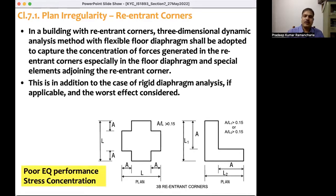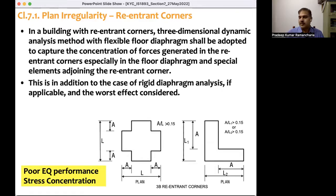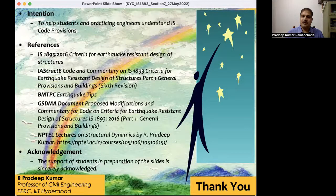In summary, when a re-entrant corner is present — that is, if the projected part in plan in any direction is more than 15% of the overall dimension — then the building has re-entrant corners. In that case, three-dimensional analysis with flexible floor diaphragm assumption should be conducted, and the worst condition between rigid floor diaphragm analysis and flexible floor diaphragm analysis has to be adopted in design. The intention of this short lecture is to help students and practicing engineers understand IS codes in a better manner.